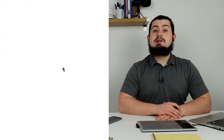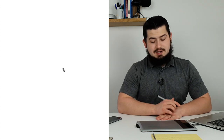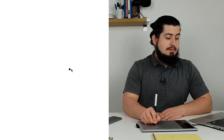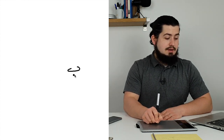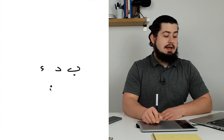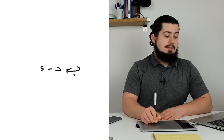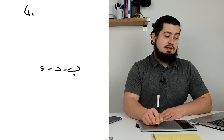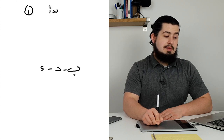So what is this root that we're talking about today? We are talking about the root letters B, D, and Hamza — B, D, Hamza. And it is usually written in its form one as the verb B-D-E.